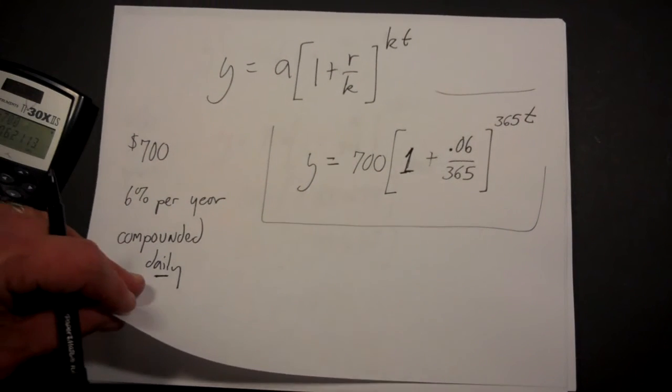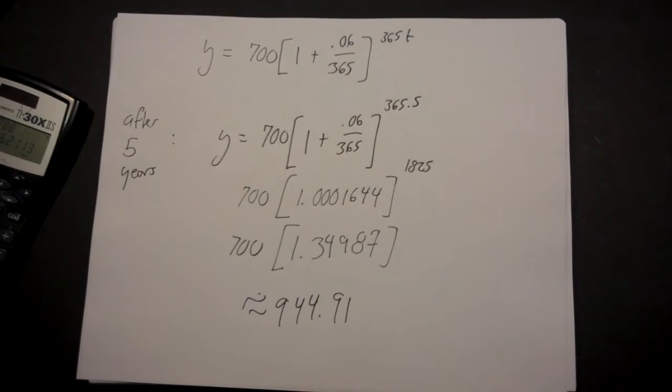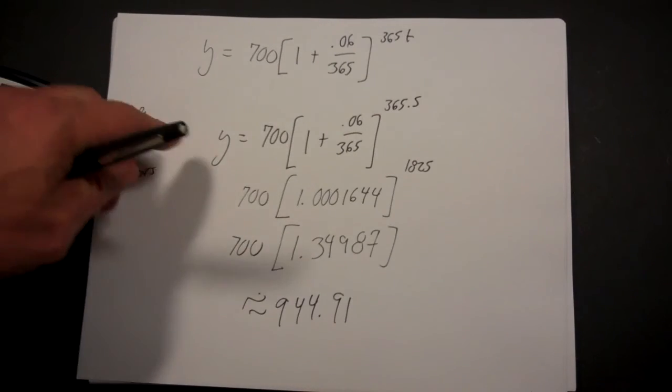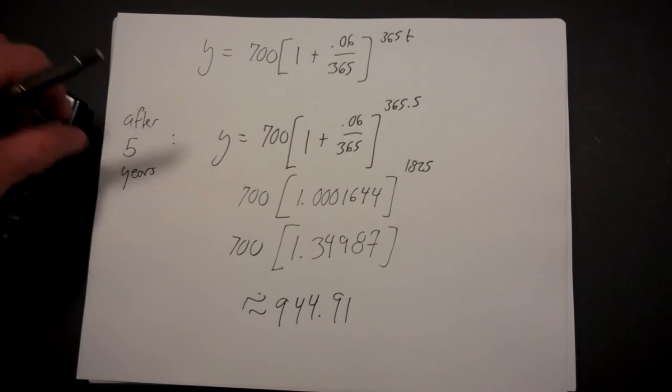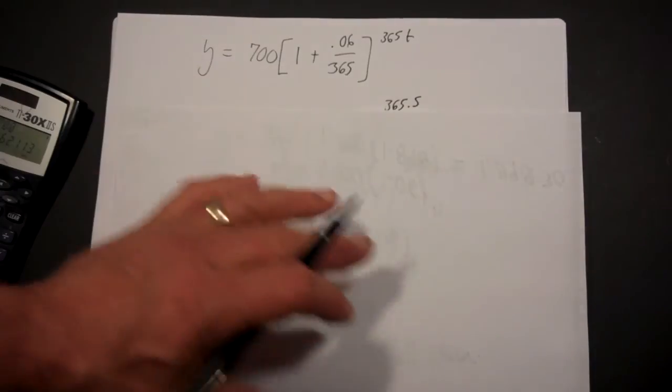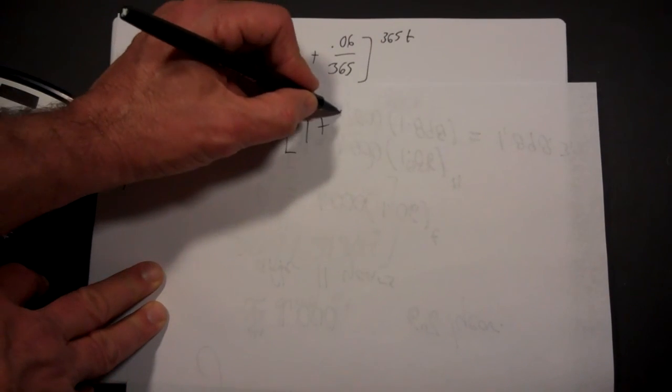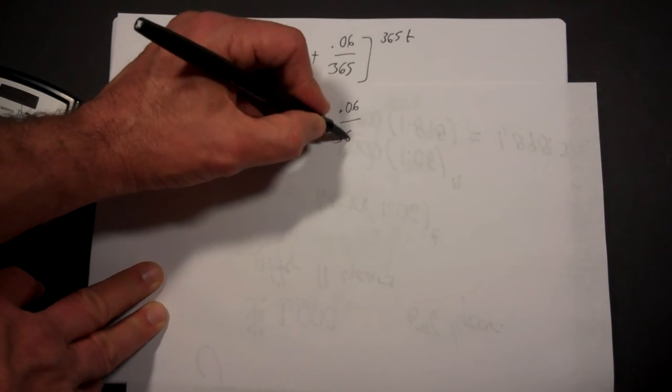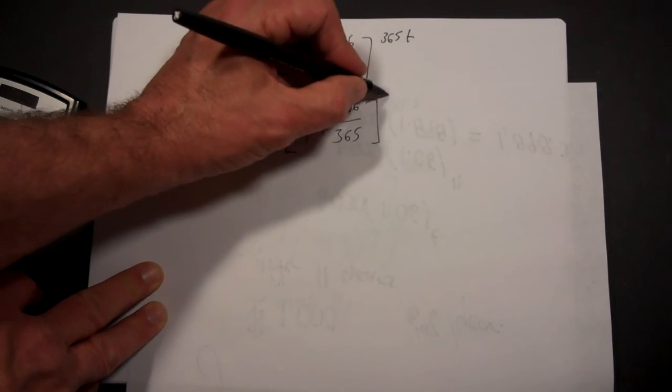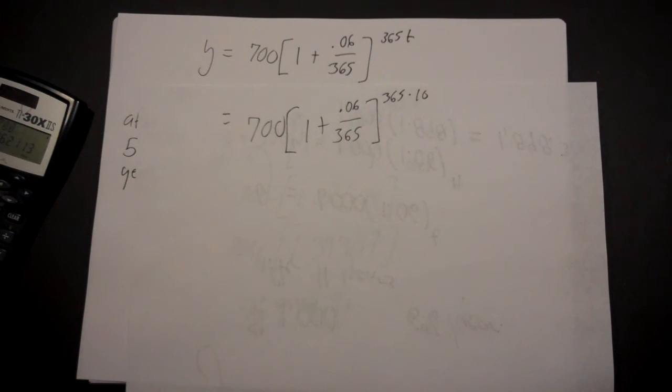Now the advantage of doing this problem with the formula is if we wanted to do it not for 5 years but for 10 years, the only difference is we would plug in a 10. So we take this exact same formula, but it would be 700 times the quantity 1 plus .06 over 365, raised to the 365 times 10. And that's especially good when you have your calculator. And that's how you do compound interest problems.